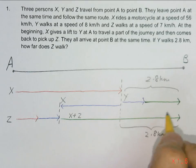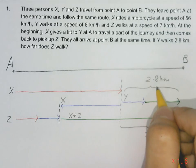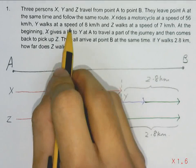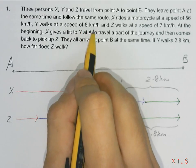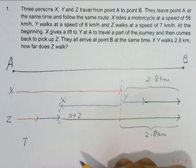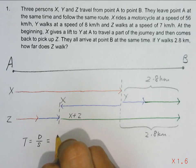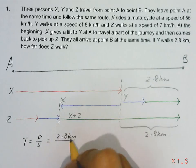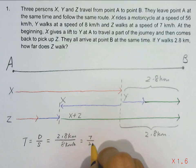Now from this part, we have the distance moved by Y. We also have the speed of Y. Because Y is walking at a speed of 8 km per hour. So we should find the time first. So given that time is distance over speed, 2.8 km divided by 8 km per hour gives us 7 over 20 hour.